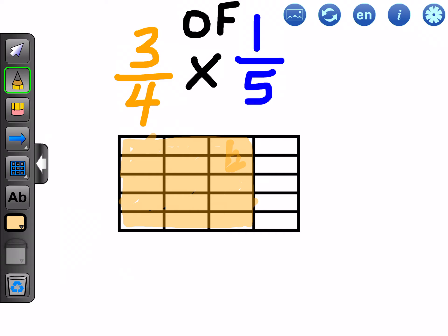Now, of this representation, our area model, we're looking to color in one fifth of it. So one fifth would be this top row here. So we're going to color in all of this top row. The stuff I colored in orange represents three quarters of the whole, and the stuff that I colored in blue represents one fifth of the whole.